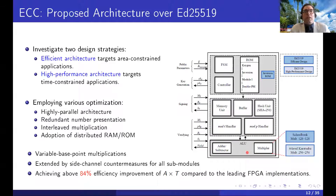We investigate two different strategies for the ED25519 curve based on the Edwards curve to target area-constrained and time-constrained applications, using several optimization techniques such as highly parallel design and adoption of distributed RAM and ROM. The pure hardware FPGA implementation is more challenging because it has several components and the interface between them is not straightforward. However, using these techniques, we achieve more than 84% efficiency improvement in terms of the area-time product compared to previous FPGA-based implementations.